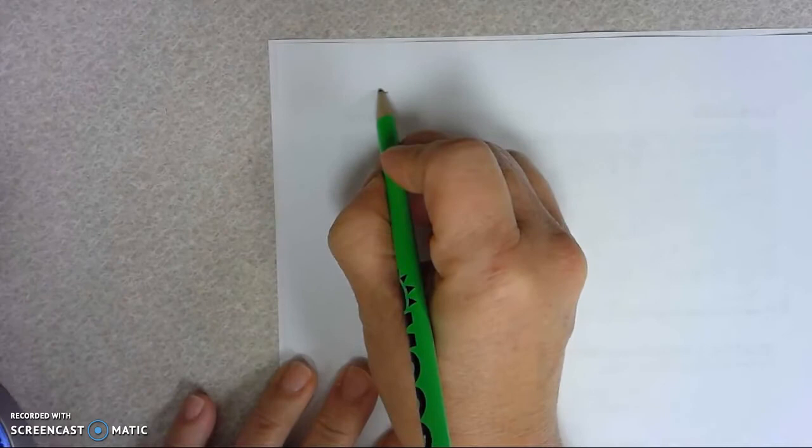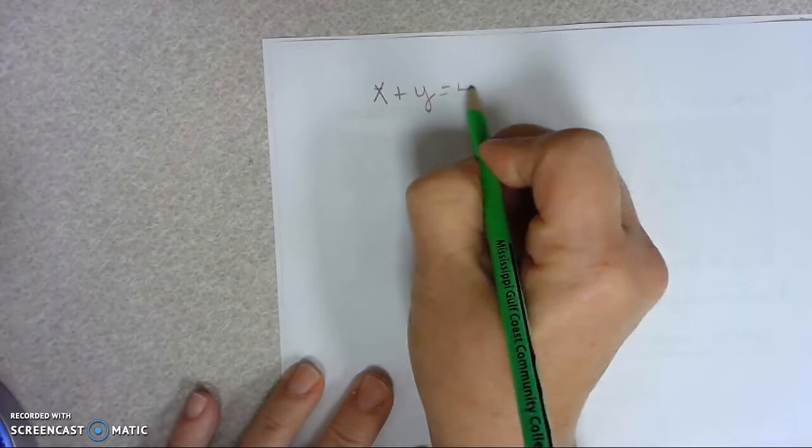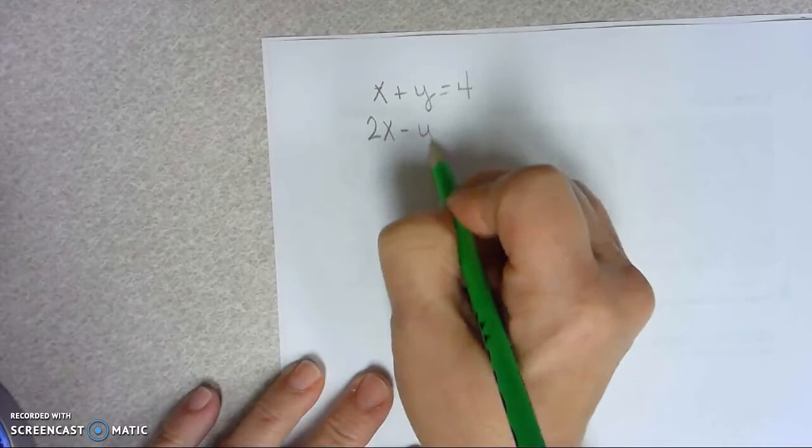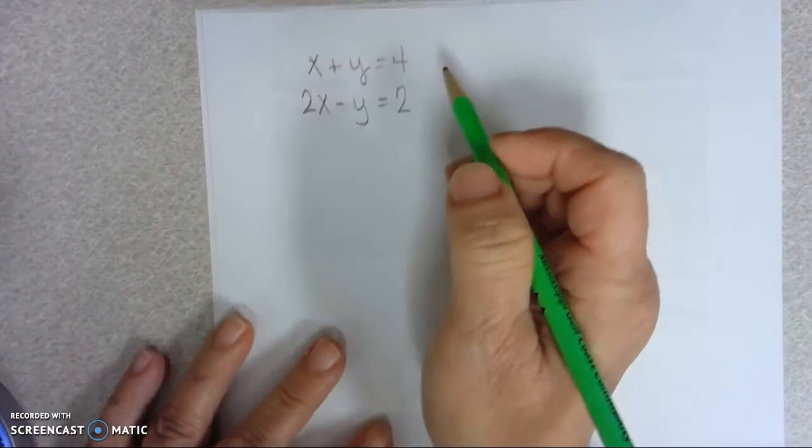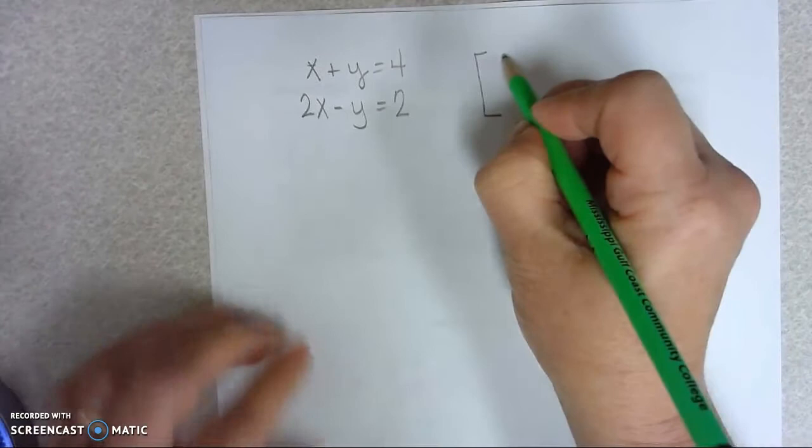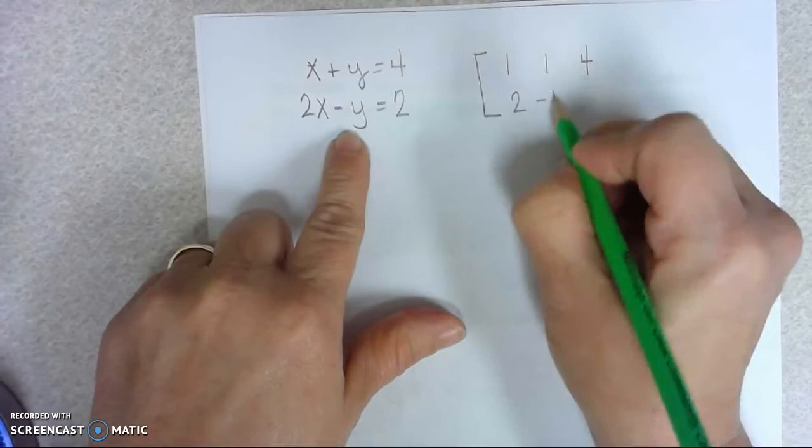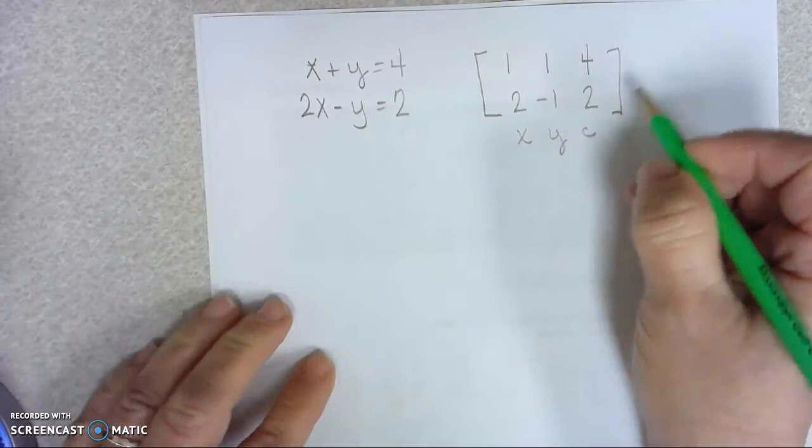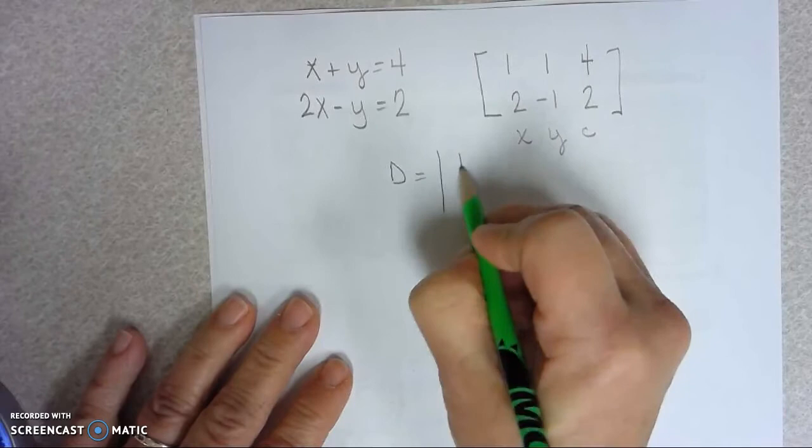So let's do a couple more. I just want to do one more. Let's find the solution of X plus Y equal 4, and 2X minus Y equal 2. Now I know you could do it by elimination easily, but that's not what we're going to do. We're going to use Cramer's rule. If I set that up as a matrix, 1, 1, 4, and 2, negative 1, 2. These are the X's, those are the Y's, and those are the constants.